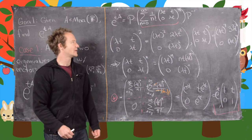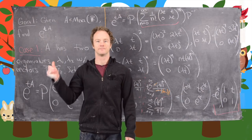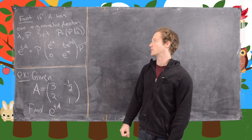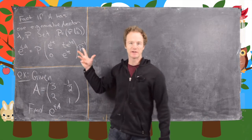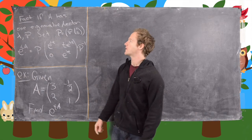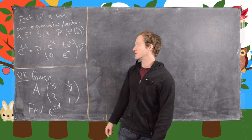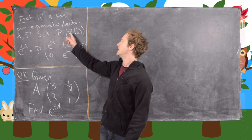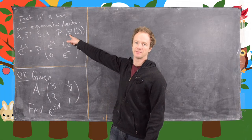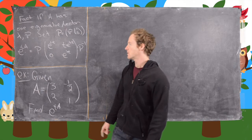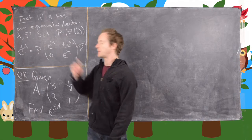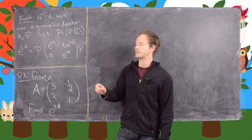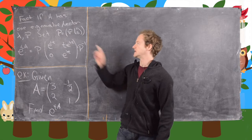Let's clean up the board and look at an example. To recall the fact we just established: if A is a 2 by 2 matrix with only one eigenvalue lambda and one eigenvector V, and we set P equal to the matrix whose first column is V and second column is (1, 0), then E to the TA is P times the matrix (E to the lambda T, T E to the lambda T, 0, E to the lambda T) times P inverse.